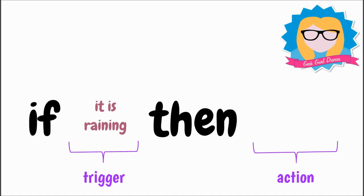For example, if it's raining then I need to put on a raincoat. Or if I wanted to apply this to a real-life situation — maybe a car has a sensor that can sense when it's raining, so if it's raining it triggers the windscreen wipers to come on, and that would be the action.